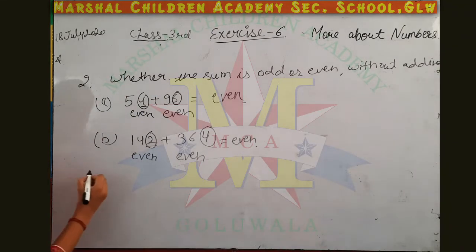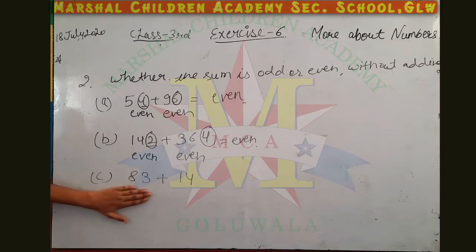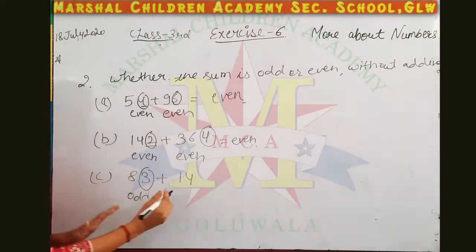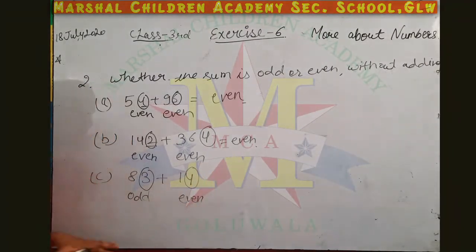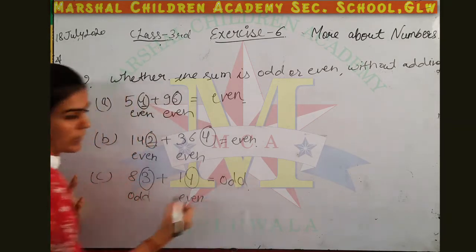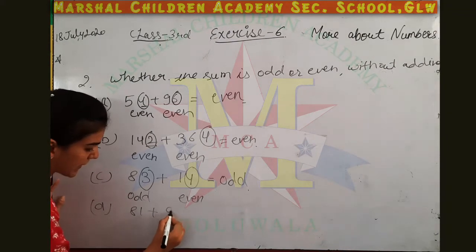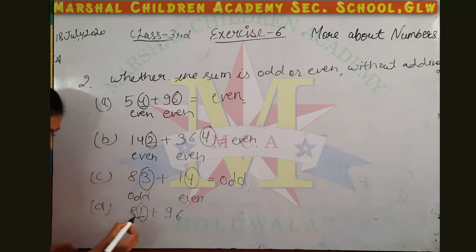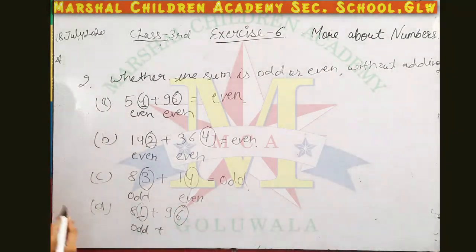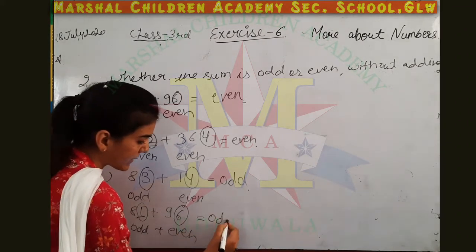For 83 plus 40: 83 ends with three — odd number. 40 ends with zero — even number. Adding an odd and an even number gives an odd number. For 81 plus 96: 81 ends with one — odd number. 96 ends with six — even number. Similarly, odd plus even gives an odd number.